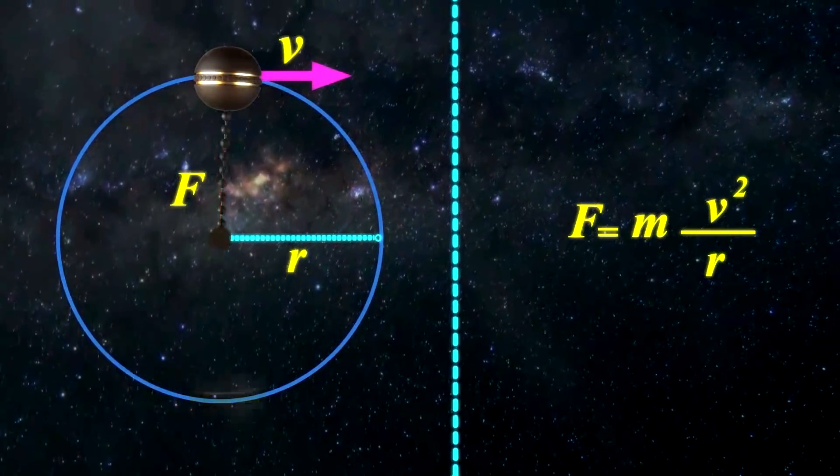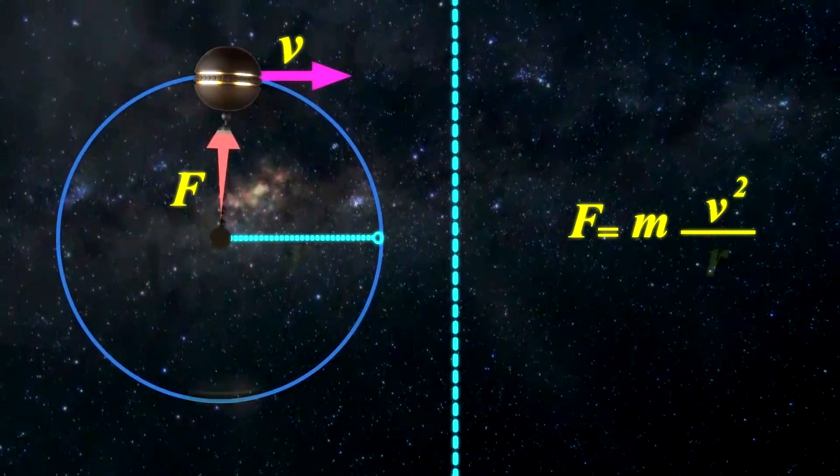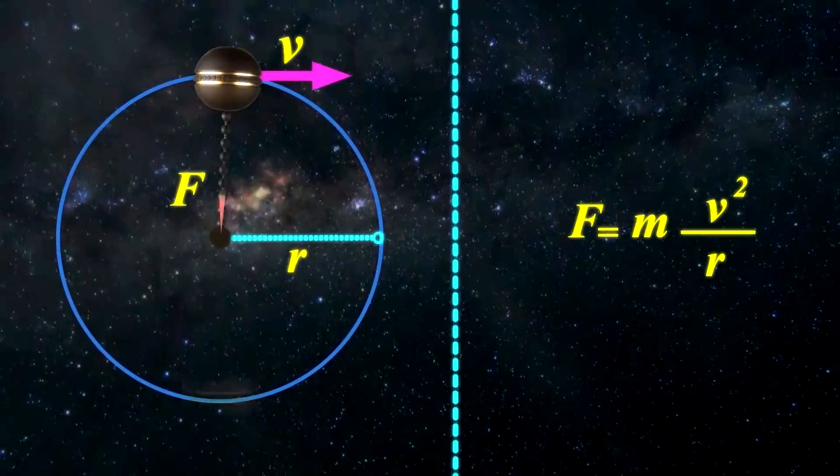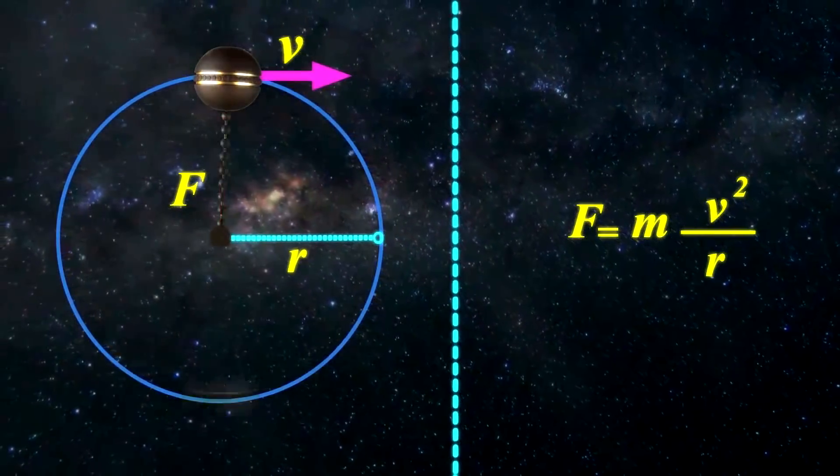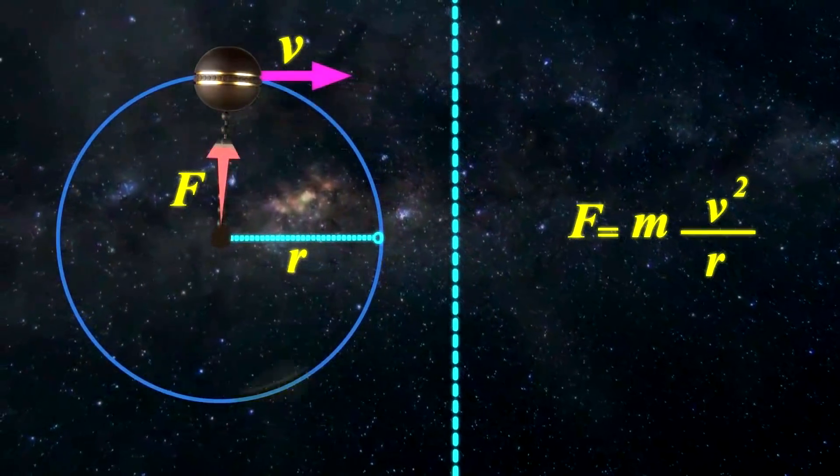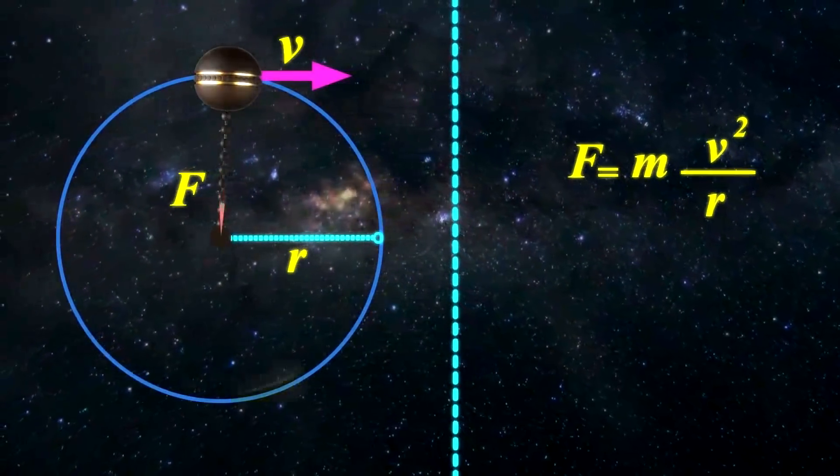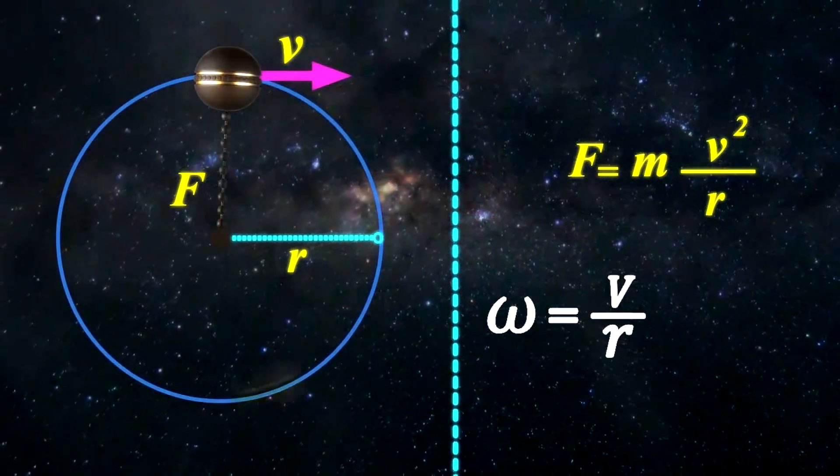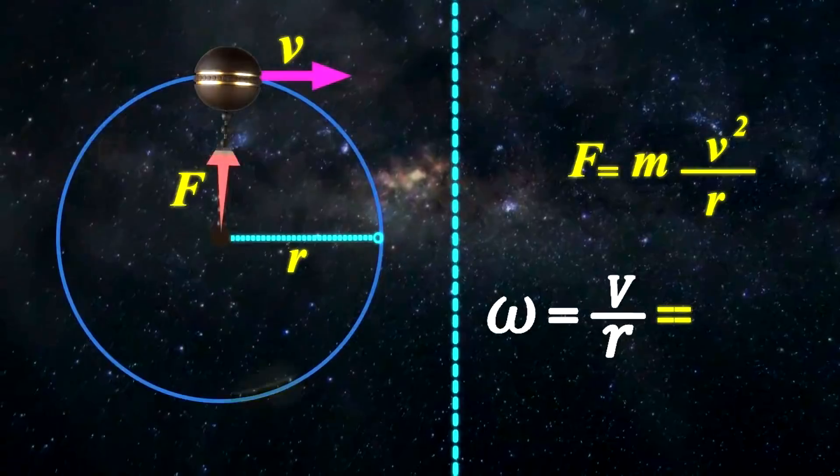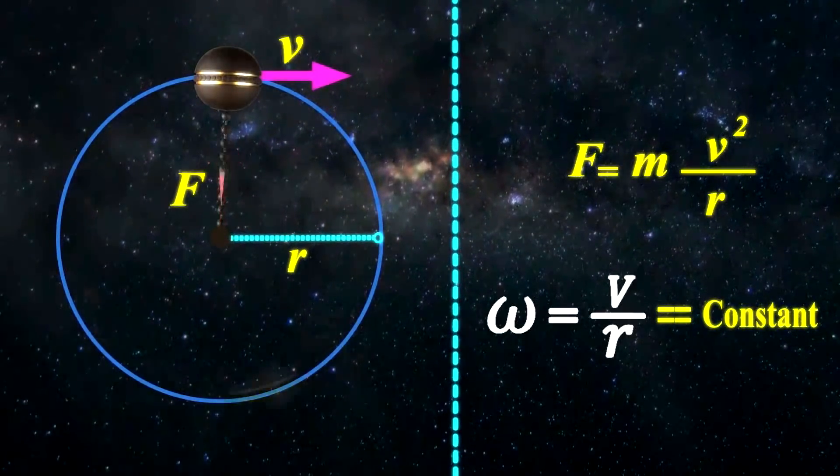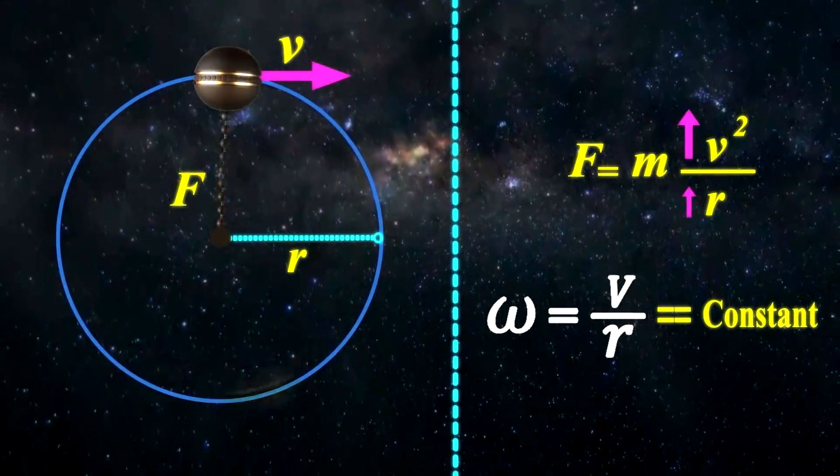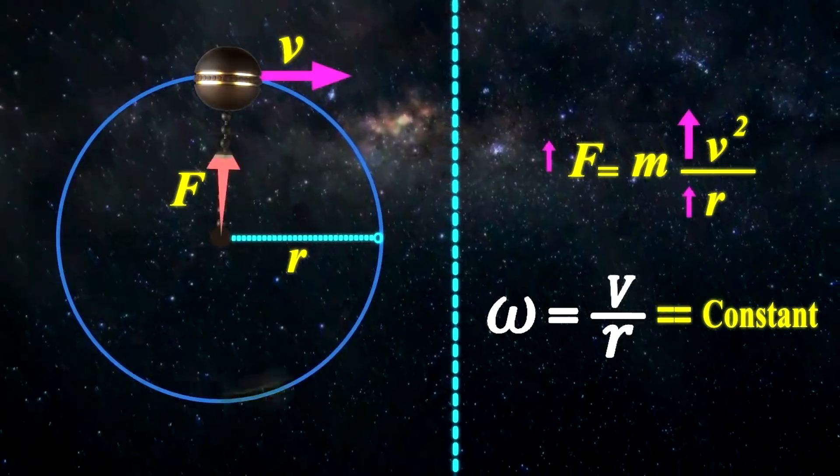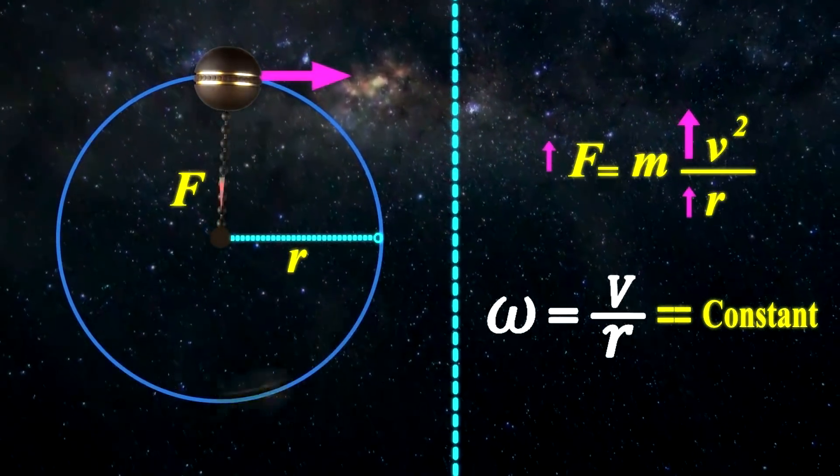Although this force is inversely related to the radius of gyration, it is directly related to the square of the velocity. And as we have already seen, the ratio between velocity and radius, or angular velocity, is constant everywhere due to the homogeneity of the universe. Consequently, the greater the radius and the speed of gyration, the greater the force.